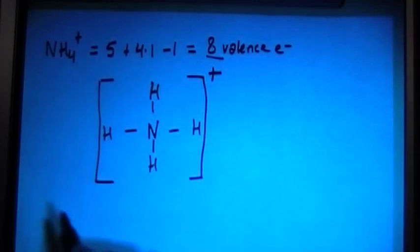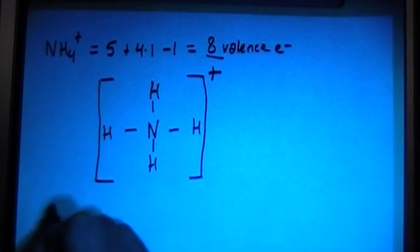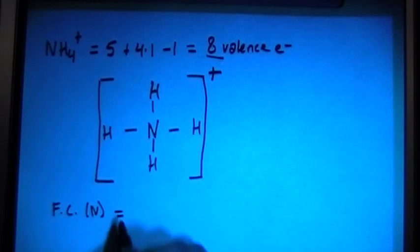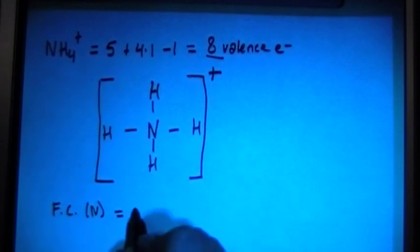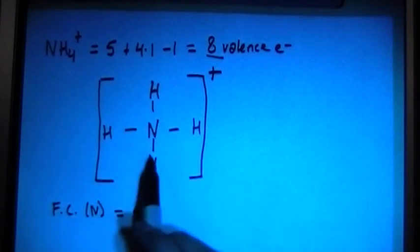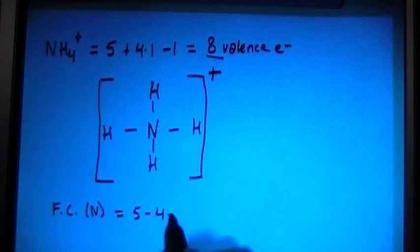Now, let's go ahead and check the formal charges just to make sure that this is going to be right. So the formal charge of nitrogen equals the number of valence electrons brought in, which is 5, minus the number of bonds, 1, 2, 3, 4, minus the number of non-bonding electrons, which there are not any of those, so it's 0, equals plus 1.